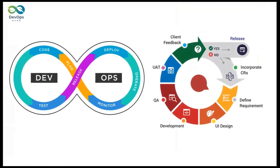DevOps is an iterative process. As you build an application, you plan, code, test, and it cycles back repeatedly. It's a move away from the waterfall model, which is sequential. With DevOps you define requirements, design the UI, develop the application, do QA, then UAT — user acceptance testing — and then collect client feedback.